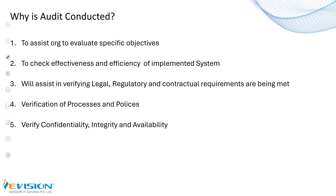Why is audit conducted? To assist organizations in evaluating their specific objectives — these can be related to financials, performance, or compliance. To check the effectiveness and efficiency of implemented systems; for example, a new system is deployed and before rollout they want to be sure there are no bugs. Audit will also assist in verifying legal, regulatory, and contractual requirements, as well as verification that processes and policies and their respective roles and responsibilities are being adhered to. It also verifies confidentiality, integrity, and availability of information.